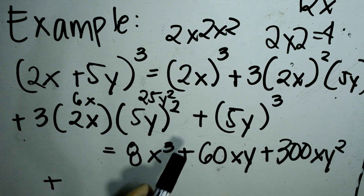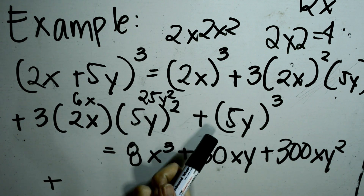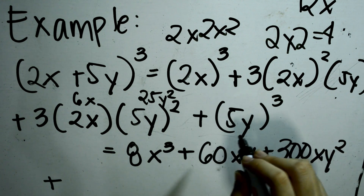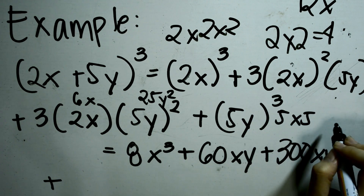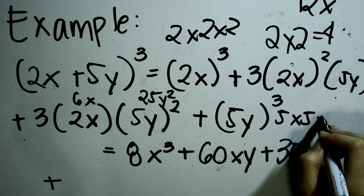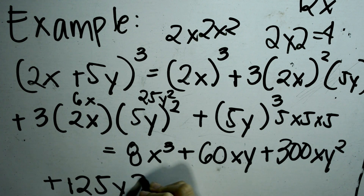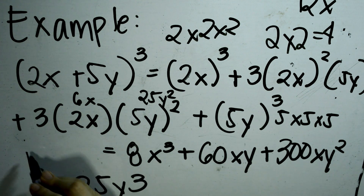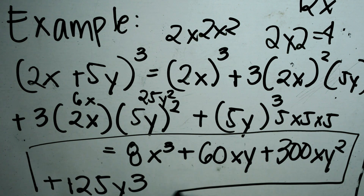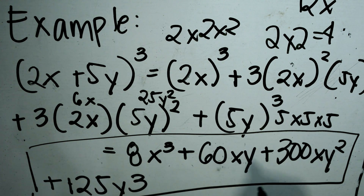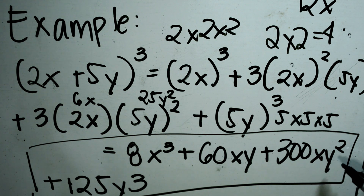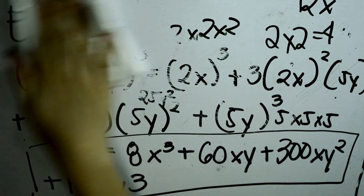Lastly, plus the cube of the last term, 5y: 5 times 5 equals 25, times 5 equals 125y cubed. So, your final answer will be 8x cubed plus 60xy plus 300xy squared plus 125y cubed.